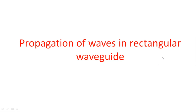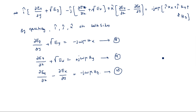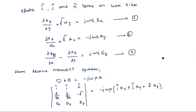Hi everyone. I am continuing the previous derivation of propagation of waves in a rectangular waveguide. Till now we have seen up to 10 equations — wave equations in terms of EX, EY, HX, and HY. We took two Maxwell's equations: from the first we got three equations, and from the second Maxwell equation we got three more equations.